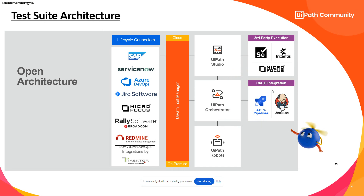For UiPath Studio, existing code built on Selenium or Robot Framework can be invoked for better reusability. If you already have test cases available or want to build new ones, those can also be executed or called from UiPath Studio. The Orchestrator connects to UiPath Robot — test results flow to Test Manager through Orchestrator, which has an extensive API exposed for CI/CD pipelines.